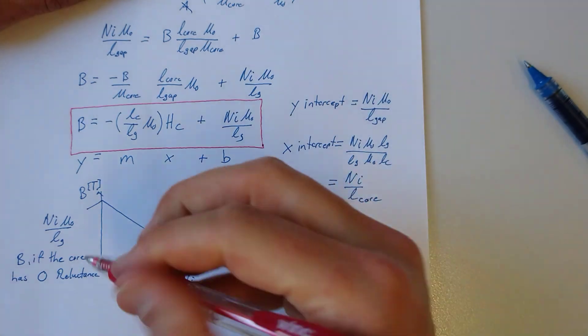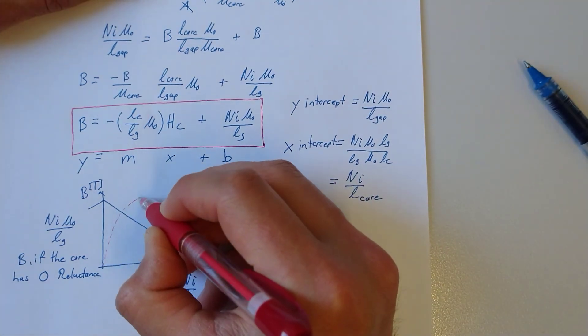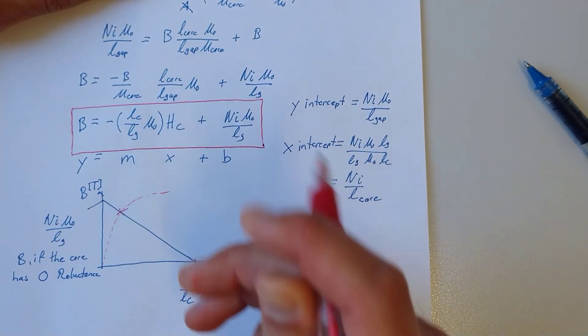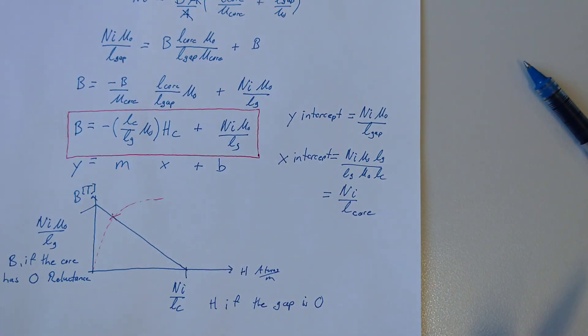So we'll see in the next example how we can apply this load line method to determine the operating point of a nonlinear magnetic circuit.